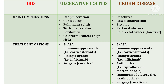Now let's talk about the treatment of Crohn's disease. Here also we can use 5-ASA, that is mesalamine and mesalazine. We can also use immunosuppressants like corticosteroids, biologic agents like infliximab, antibiotics like ciprofloxacin and metronidazole, and immunomodulators like azathioprine, as well as surgery. But in the case of Crohn's disease, surgery is not curative.